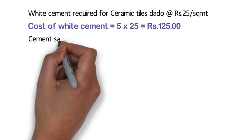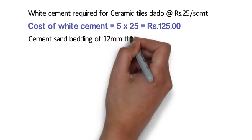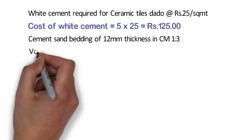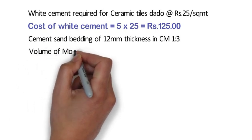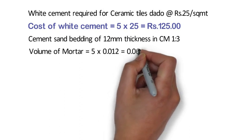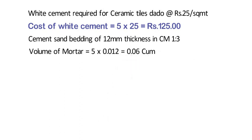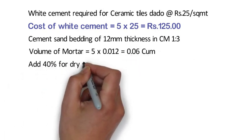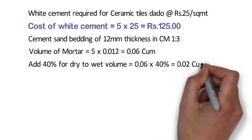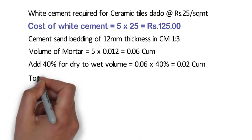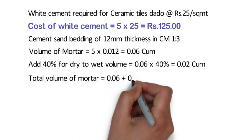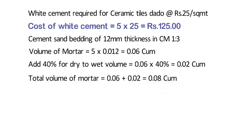For dado, a cement sand bedding of 12 mm thickness in cement mortar 1:3 is used. We have to calculate the volume of mortar first. The formula is 5 x 0.012 = 0.06 cubic meters. Now we will add 40% for dry to wet volume conversion: 0.06 x 40% = 0.02 cubic meters. Total volume of mortar shall be 0.06 plus 0.02 = 0.08 cubic meters.